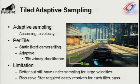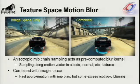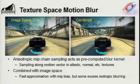We could have applied a recursive filter in image space, but there's an additional cost for each resolve of each pass. Instead, we look to texture space motion blur to complete the effect. We apply anisotropic MIP chain sampling along the direction of motion into albedo, normal, and matte textures — acting as a pre-computed blur kernel sampled online. Combining this with image space sampling, we do a fast approximation using a MIP LOD bias. This results in some excess blurring but is significantly faster than full anisotropic texture sampling.